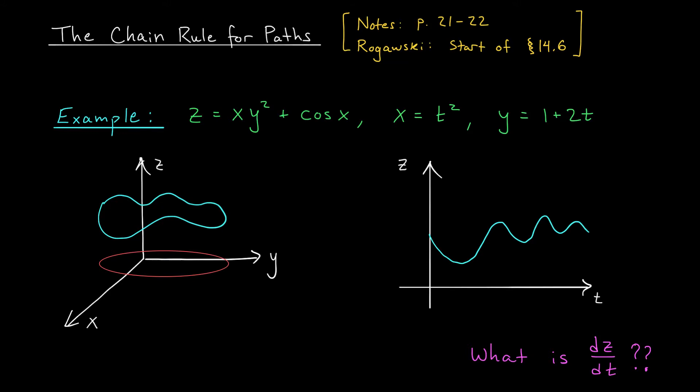The setup for our discussion is as follows. We have a function z that depends on variables x and y. Here, z is equal to xy squared plus cos x. Here's the twist though. x and y themselves depend on another variable, t. So here, x is t squared, and y is 1 plus 2t.